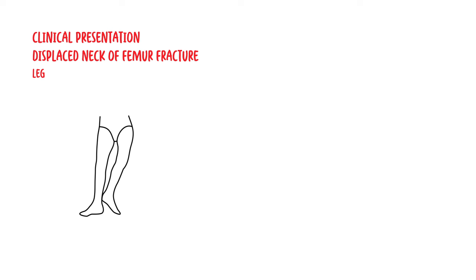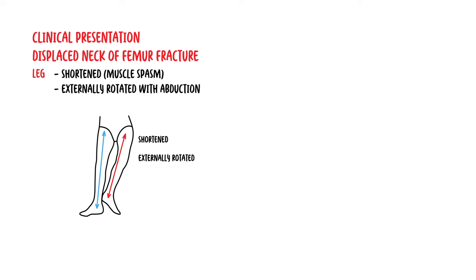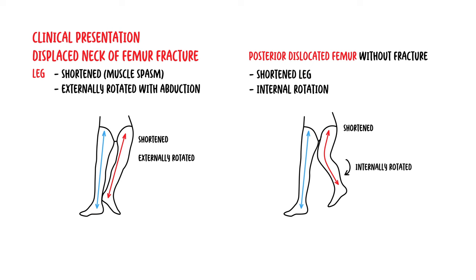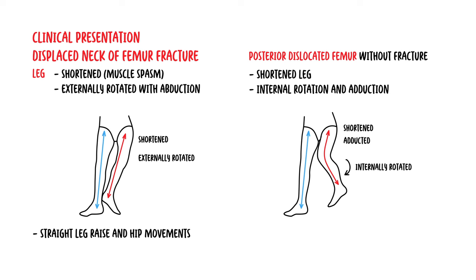With a displaced neck of femur fracture, the leg will be shortened, externally rotated, with abduction. Muscle spasm contributes to the shortening of the limb. In contrast, a posterior dislocation of the femur without a fracture presents with a shortened leg, internal rotation, and adduction. Straight leg raise and hip movements are globally inhibited by pain. Neurological state is important to assess.